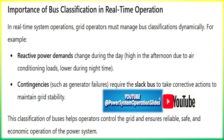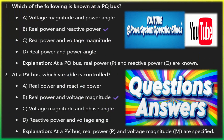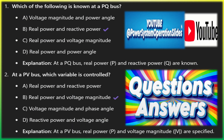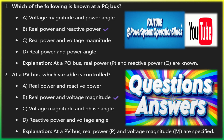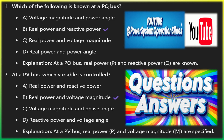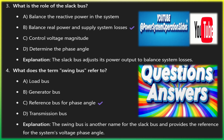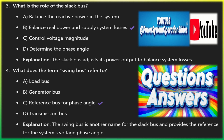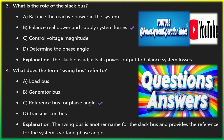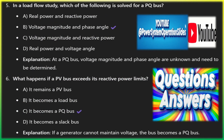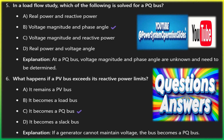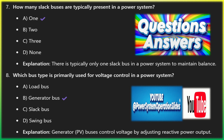Balancing real power: in any power system, total generation should equal total load plus transmission losses. However, these losses cannot be calculated directly until the load flow is solved. The slack bus provides the necessary balancing by adjusting its real power P to match system losses. Reactive power balance: the slack bus also absorbs any discrepancies in reactive power, ensuring that reactive power across the network is maintained, which is crucial for voltage stability. There is typically only one slack bus, as multiple buses adjusting for system-wide discrepancies can cause inconsistencies in solving load flow equations. The voltage angle of the slack bus is set to zero degrees, providing a reference point for phase angle calculations at all other buses.